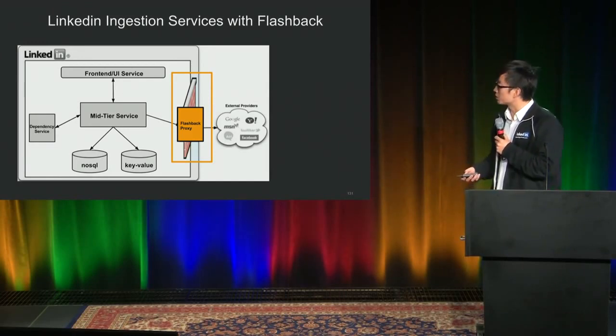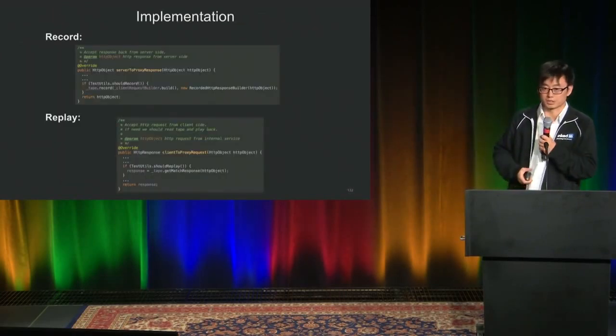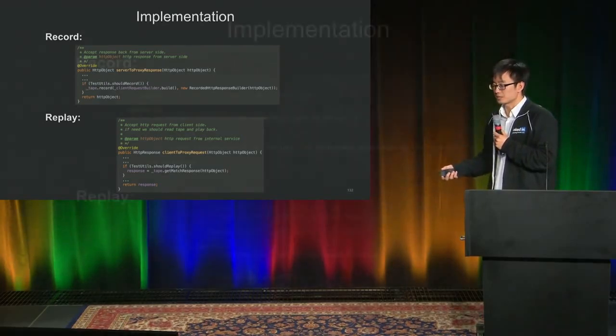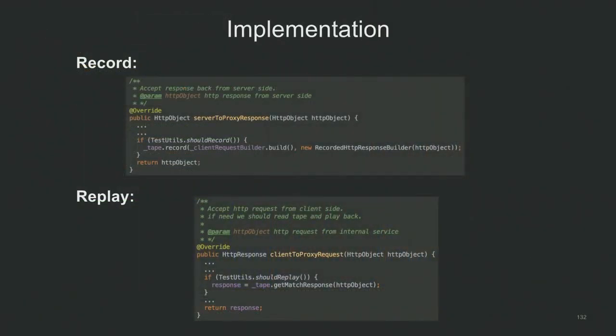Let me show you some code. This is the implementation of record and replay inside Flashback. When recording, we take the response from the external provider, pair it with the request from the internal service, and store them locally. When replaying, we load the locally stored response matching the incoming request and return it — so there's no traffic going out to the Internet.